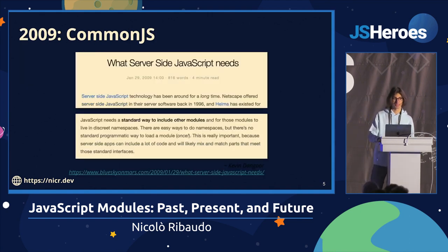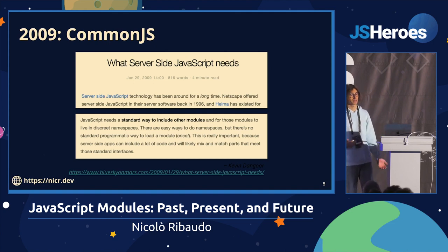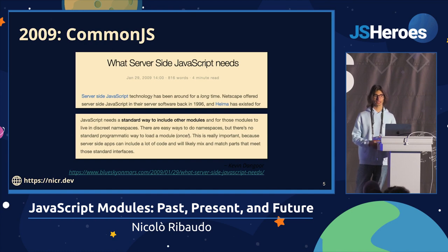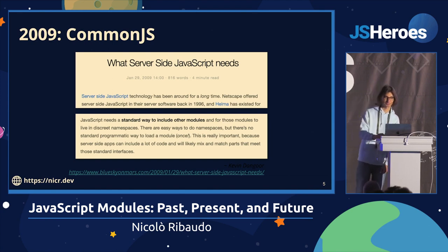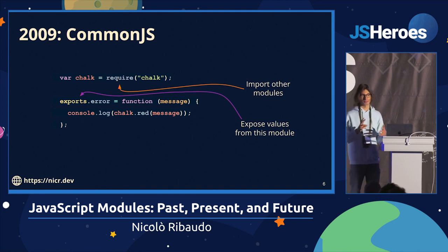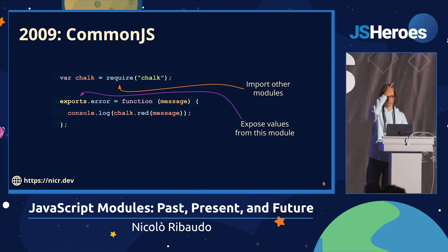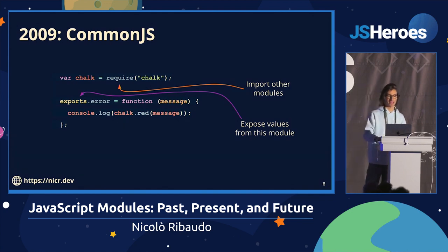Except that web apps started getting more complex. And after a bunch of years, in 2009, we realized that wasn't enough anymore. People working on JavaScript on the server started having big and complex applications with a lot of different files interacting together. They needed a way to organize all these files, avoid conflicts in the global scope, and easily load all the dependencies they needed. They formed a group and defined something now known as CommonJS — originally called ServerJS, because it was for the server.